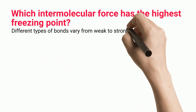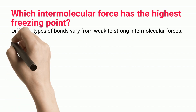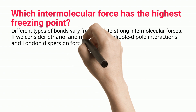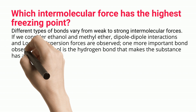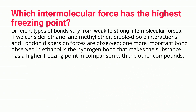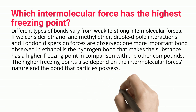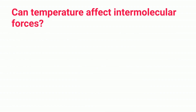Different types of bonds vary from weak to strong intermolecular forces. If we consider ethanol and methyl ether, dipole-dipole interactions and London dispersion forces are observed. One more important bond observed in ethanol is the hydrogen bond, which makes the substance have a higher freezing point in comparison with other compounds. Higher freezing points also depend on the nature of the bond that particles possess.